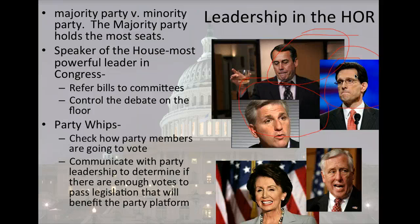Party whips — both the Republicans and the Democrats have a party whip — and their job is to whip their party in line. They are supposed to check on how party members are going to vote on a piece of legislation and make sure that they do it. With the repeal of Obamacare, it was the Republicans' whip's job to make sure all Republicans voted to repeal it. When Obamacare was getting passed, it was the Democrats' whip's job to make sure every Democrat in the House voted the same way. Party whips communicate with their party members and leadership to determine if there are enough votes to pass a piece of legislation. Parties want to pass legislation that will benefit their party's platform — the issues that party supports.